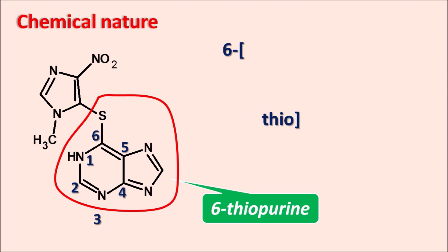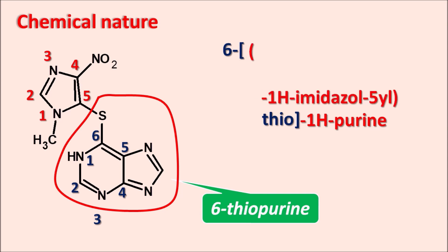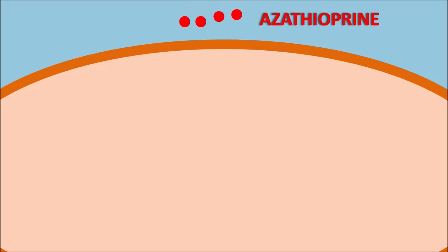The chemical name of azathioprine is 6-thio-1H-purine. At the sixth position there is another heterocyclic ring system — the imidazole ring, numbered one through five. This imidazole ring is attached at the fifth position, so it is written as 1H-imidazol-5-yl. The imidazole ring has a methyl group at position one and a nitro group at position four, completing the name of azathioprine.